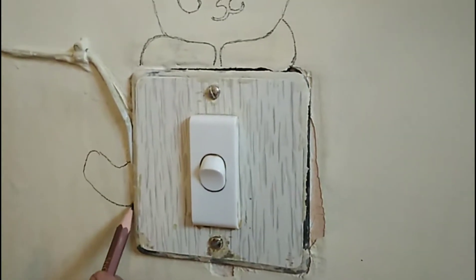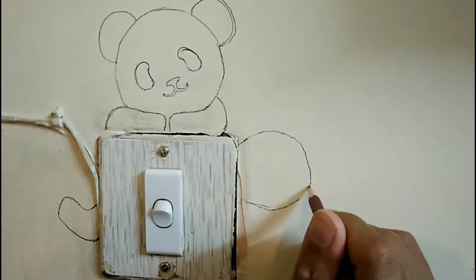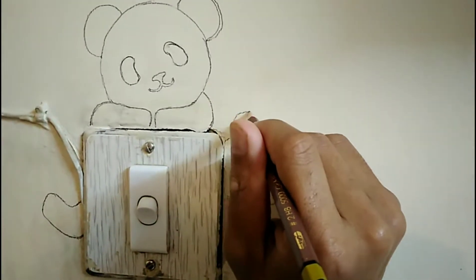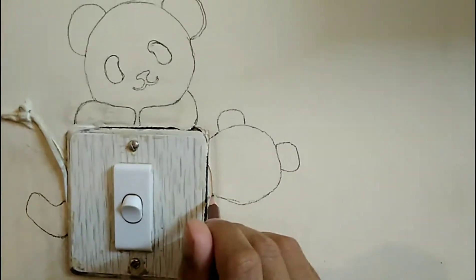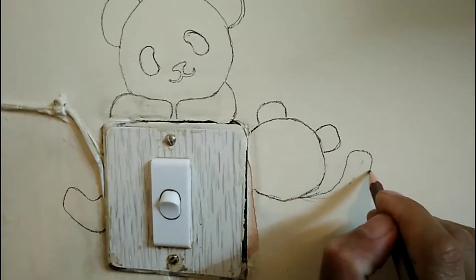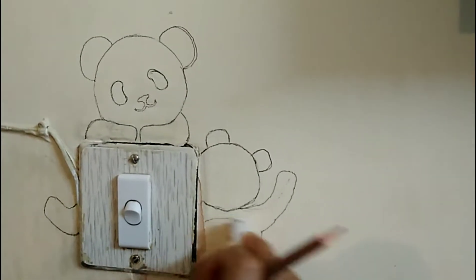By now you can see that he has drawn a panda. Now he is drawing another small panda by the side of the switchboard. Drawing with a lead pencil allows you to erase your mistakes until you reach a perfect picture.